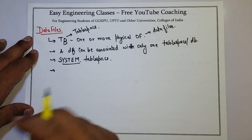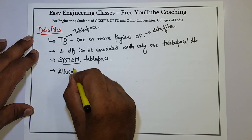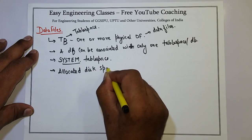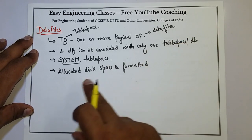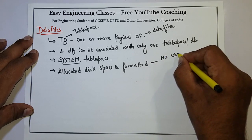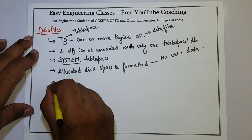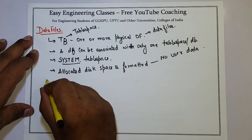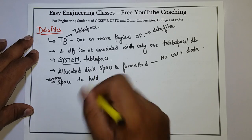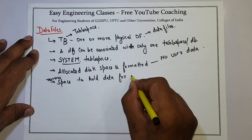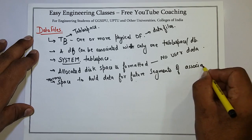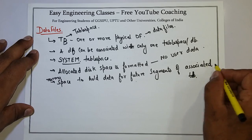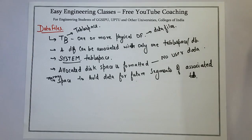Whenever a data file is created for the first time, the allocated disk space is formatted — meaning it is ready to store data but does not have any data. So the disk is formatted but no user data exists the first time a data file is created. Oracle reserves space to hold data for future segments of the associated table space. Initially there is no data, and when data gets inserted in the data files, Oracle still reserves some space for future segments of the associated table space.